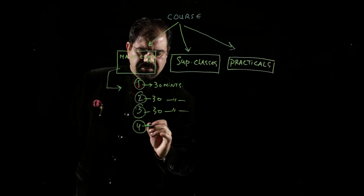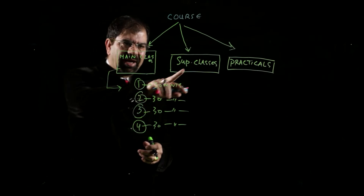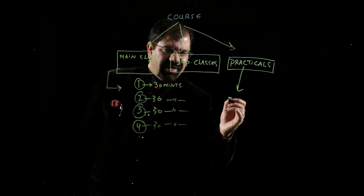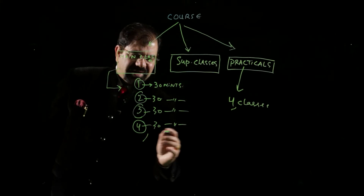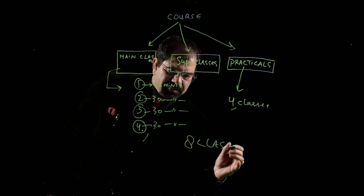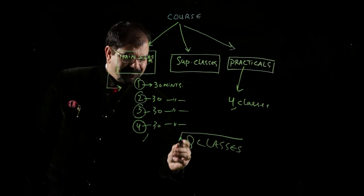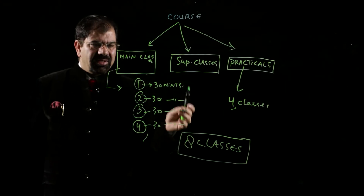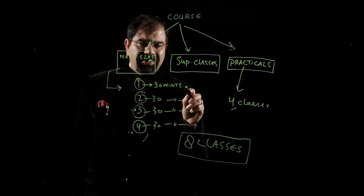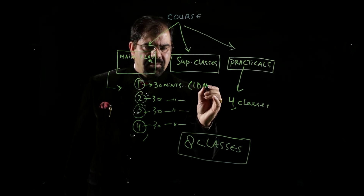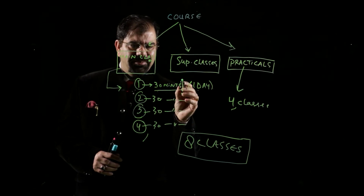Now, how much time will we give you? In main class, we are having four classes, and in the practicals, you will be having four classes. That means you are having four and four — eight classes in total. When we are having eight classes in one course, each class is thirty minutes. We will give you complete twenty-four hours — one full day for one class — so you get complete one day to watch each thirty-minute class video.